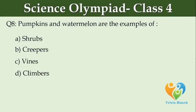Pumpkins and watermelon are examples of: Option A: shrubs, Option B: creepers, Option C: vines, Option D: climbers.